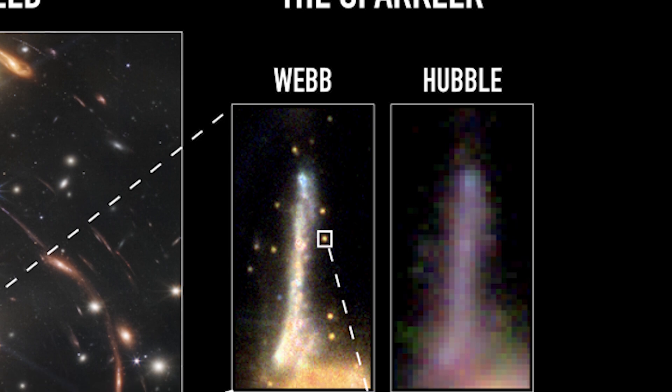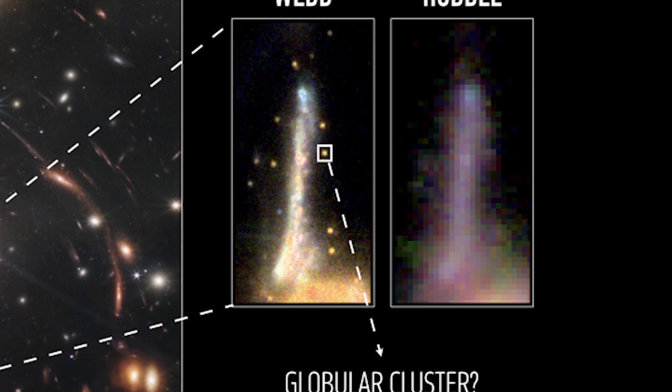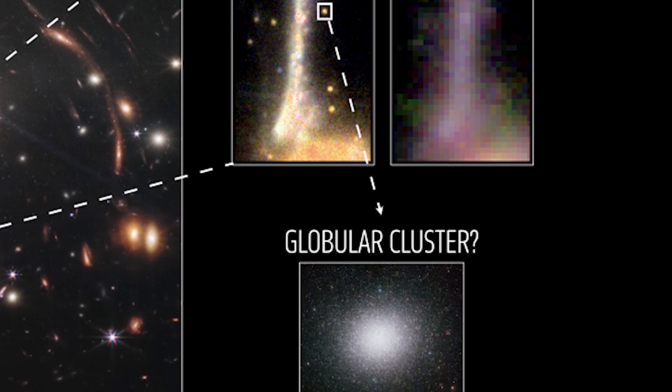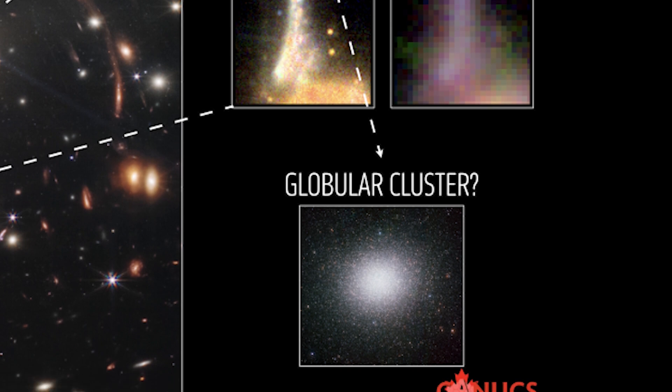Researchers have determined that 5 out of the first analyzed 12 compact objects from Webb's high-resolution picture are in fact globular clusters. And not just any clusters, but one of the oldest ones we have known.